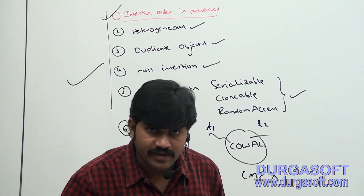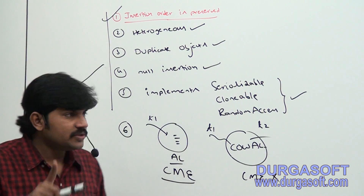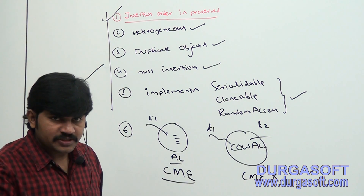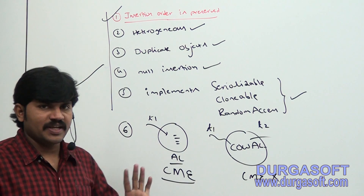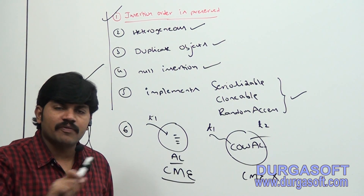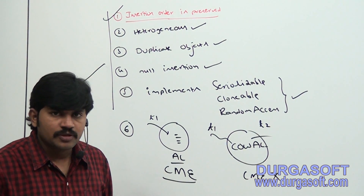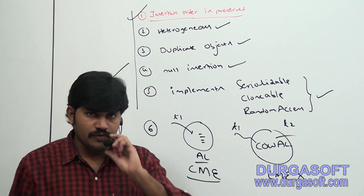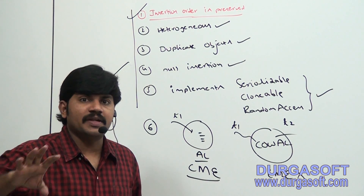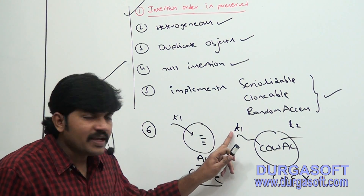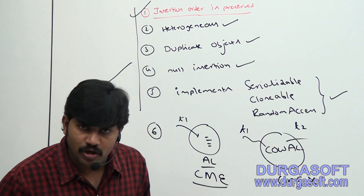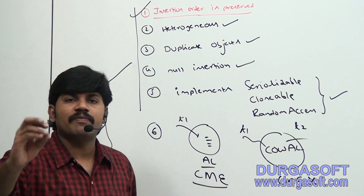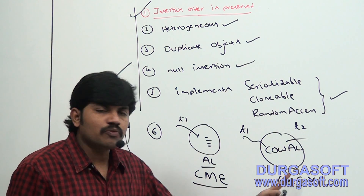So, in normal ArrayList, while one thread is performing iteration, the other threads are not allowed to perform any update operation. By mistake if you try to, you will get ConcurrentModificationException. But in the case of CopyOnWriteArrayList, while one thread is performing iteration, other threads are allowed to perform update operations and we won't get any ConcurrentModificationException.